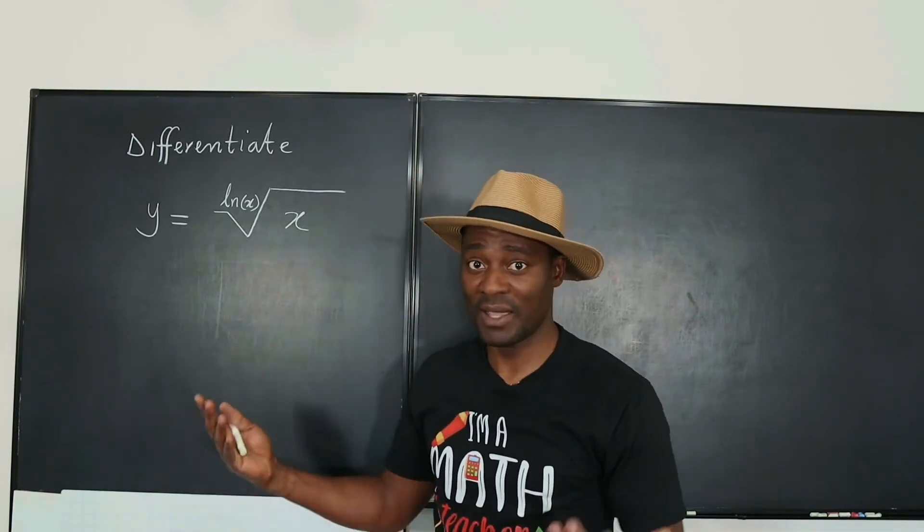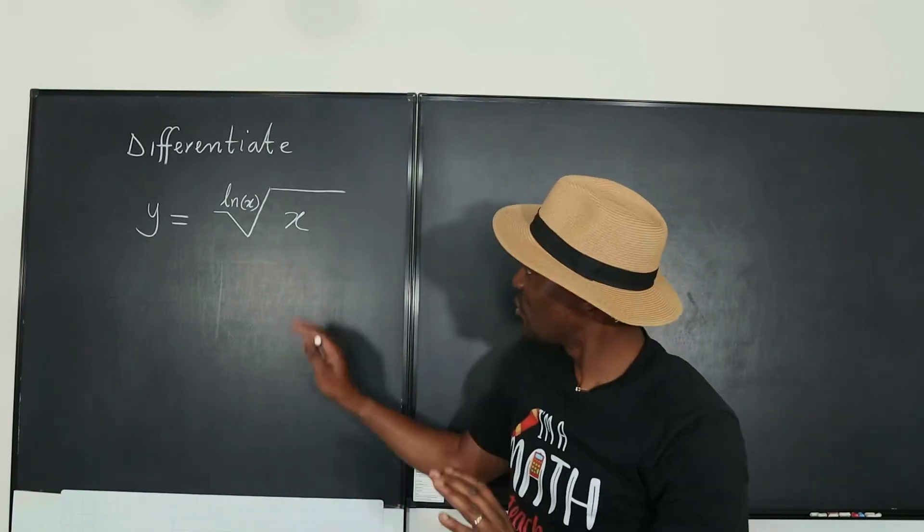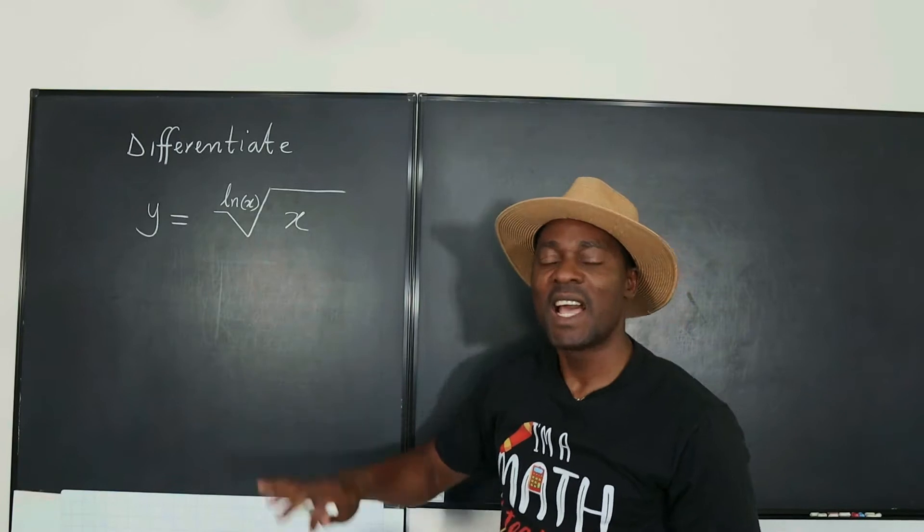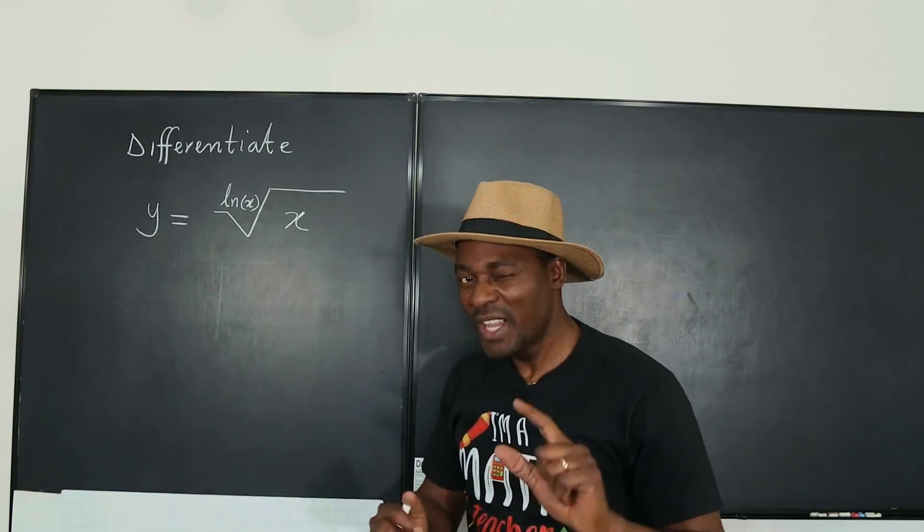And if it's expressed as an exponent, then there's something you can do about it. So the first thing you want to do is try to rewrite the right hand side as an exponent so it's easy for you to differentiate. Let's start with that.